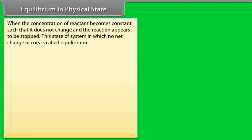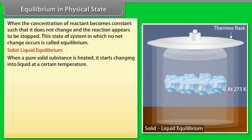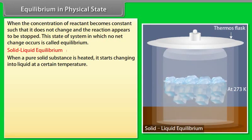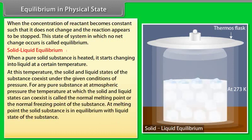Equilibrium in Physical State: When the concentration of reactant becomes constant such that it does not change and the reaction appears to be stopped, the state of system in which no net change occurs is called equilibrium. Solid-Liquid Equilibrium: When a pure solid substance is heated, it starts changing into liquid at a certain temperature. At this temperature, the solid and liquid states of the substance coexist under the given conditions of pressure.